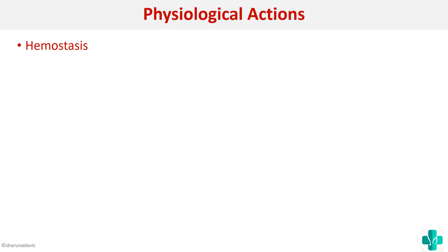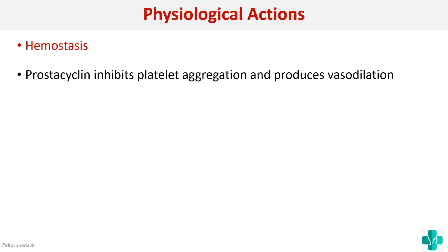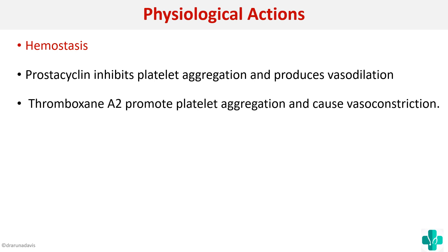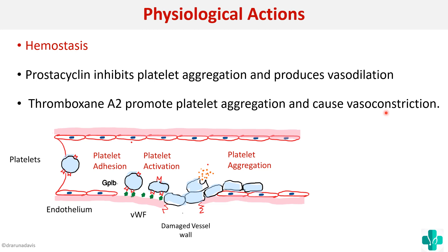Next we will see the effect on hemostasis. Prostacyclin can inhibit platelet aggregation and produce vasodilation, whereas thromboxane A2 has the opposite effect — it promotes platelet aggregation and causes vasoconstriction. Remember the different steps of temporary hemostasis formation: platelet adhesion, activation, and aggregation. Prostacyclin inhibits platelet aggregation whereas thromboxane A2 promotes platelet aggregation and causes vasoconstriction.